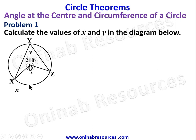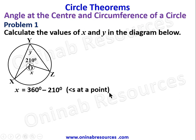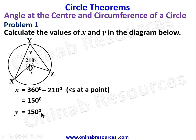Therefore, x equals 360 degrees minus 210 degrees — angles at a point — which gives 150 degrees. From here we can find the value of y. Since y is at the circumference and the corresponding angle at the center is x, we have y equal to 150 degrees divided by 2.